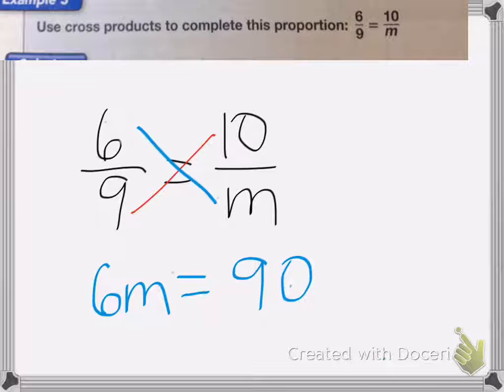So now what I need to do is I need to get this m by itself. So to do that, I'm going to get rid of the numbers next to it. In this case, we have 6 times m. So I'm going to do the opposite problem. So I'm going to divide both sides by 6.